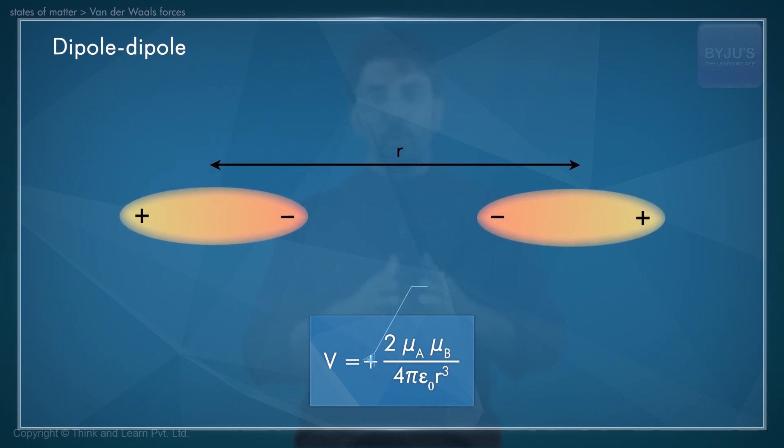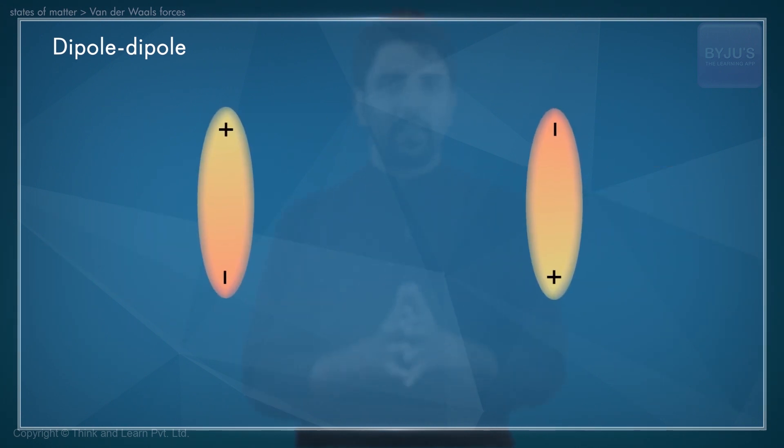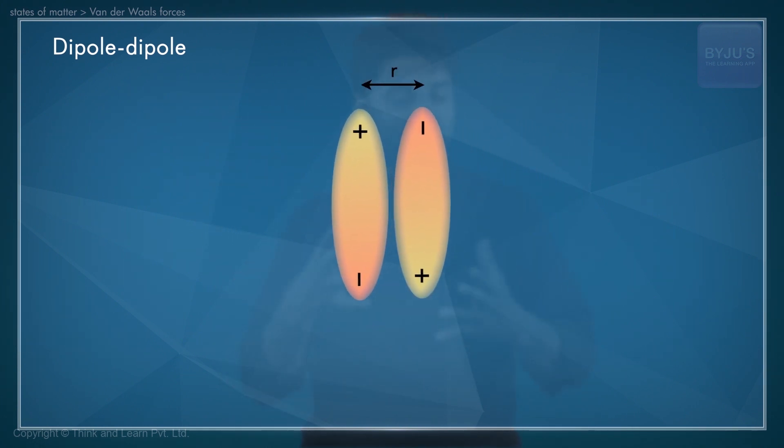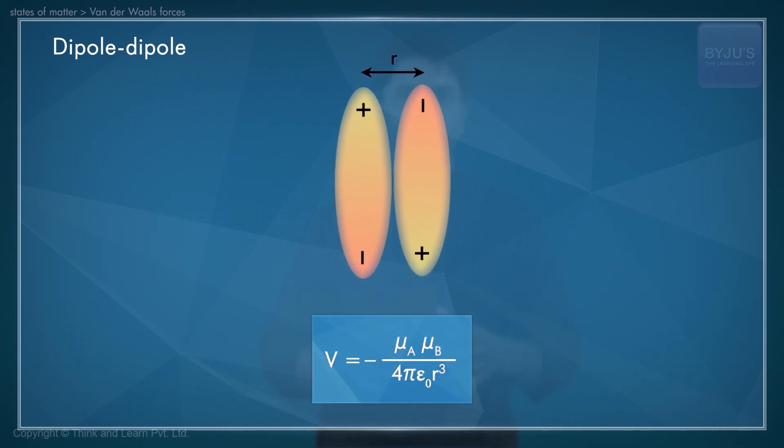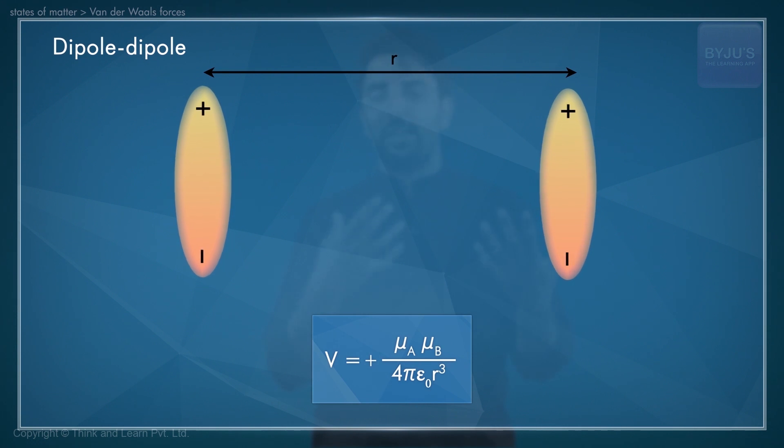Here nu_a and nu_b are the magnitudes of the dipoles of the molecules which are separated by a distance r. Likewise, we could have dipoles as shown here. Once again, you may be able to guess that this interaction is attractive in nature. If you look at the expression for potential energy of this configuration, should we reverse the orientation of any one of these dipoles, the interaction becomes repulsive.